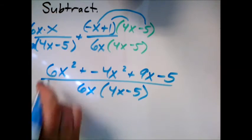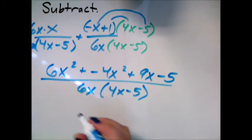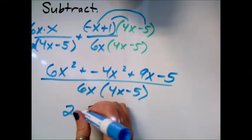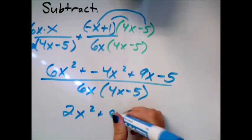And then see if there's any like terms. 6x squared and negative 4x squared give me 2x squared plus 9x minus 5.